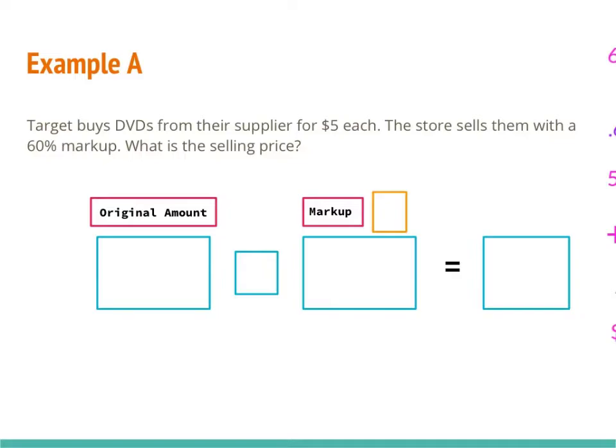Example A says Target buys DVDs from their supplier for $5 each, and the store sells them with a 60% markup. What is the selling price? I've laid out three different boxes: the first box for the original amount, the second box for the markup amount, and the final box for the answer. The original amount in this problem is $5, so I'm going to put $5 in the original amount box. Since it's talking about markup, I know I'm going to be adding to the total, so I put a plus sign there.